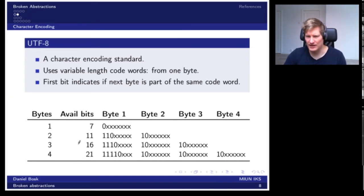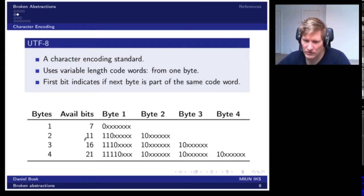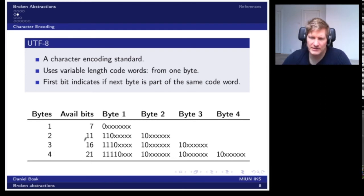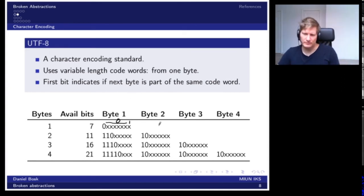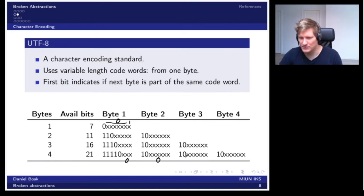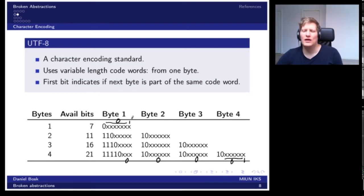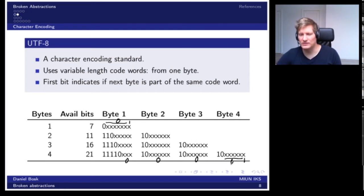One problem that occurred with UTF-8 in the past is that you could specify one character in several ways. For example, if we take the four-byte version and set all the extra bits to zero with the final bit set to one, and compare it to the one-byte version with only the last bit set to one, both represent the same character — it's one way of representing the same character in two different ways.